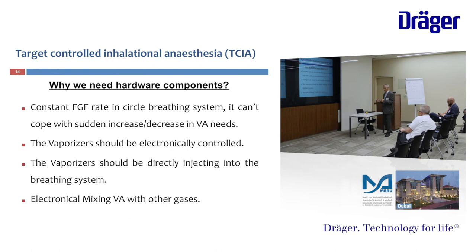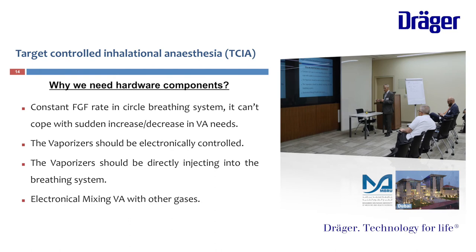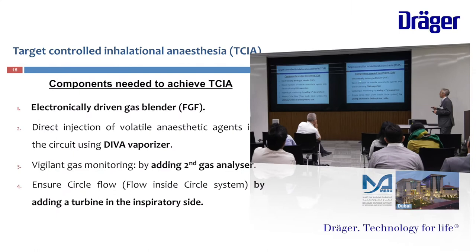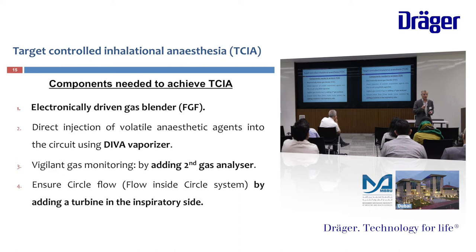And finally, electronical mixing of volatile anesthetic with other gases. Components needed to achieve TCIA: electronically driven gas blender, direct injector for volatile anesthetic — the DIVA vaporizer — and we need to monitor very accurately and very closely the gas. Because of this, while using the automatic gas control, we need to have a second gas analyzer. We don't depend on one gas analyzer because we will reach very critical levels of fresh gas flow.